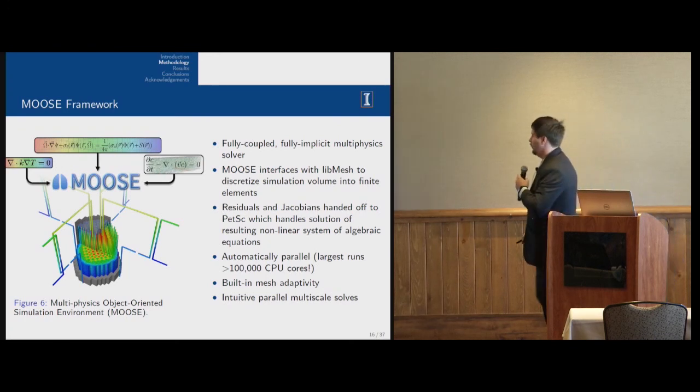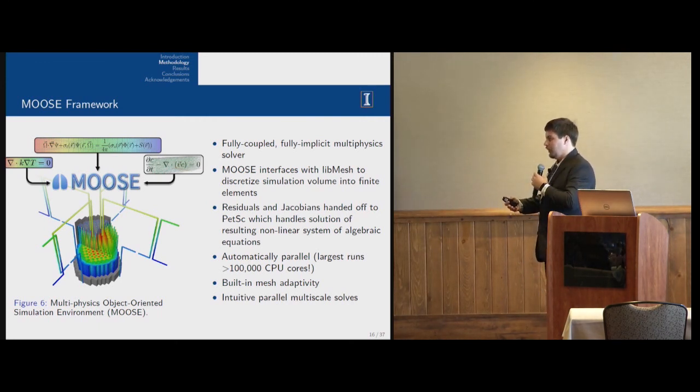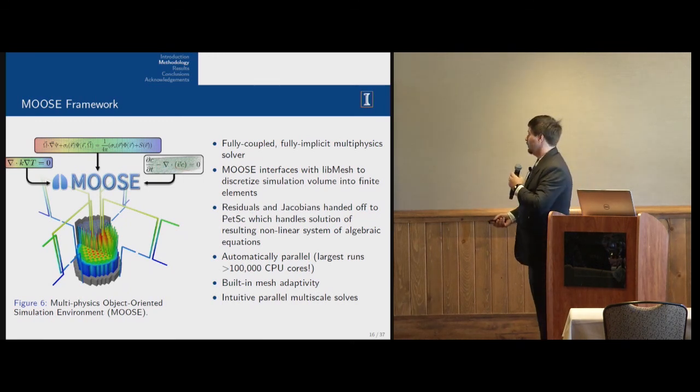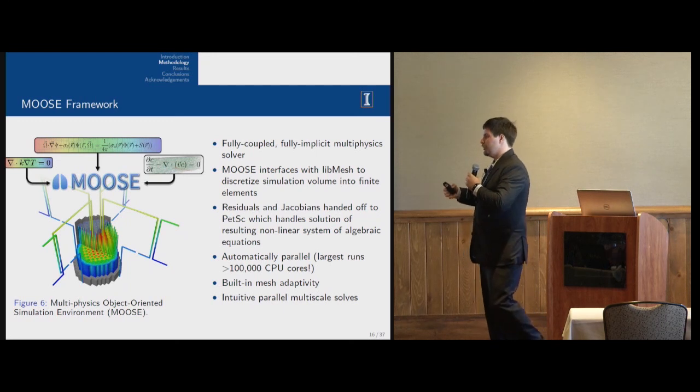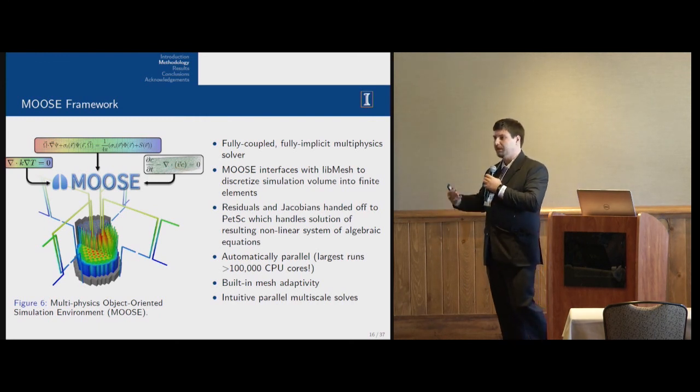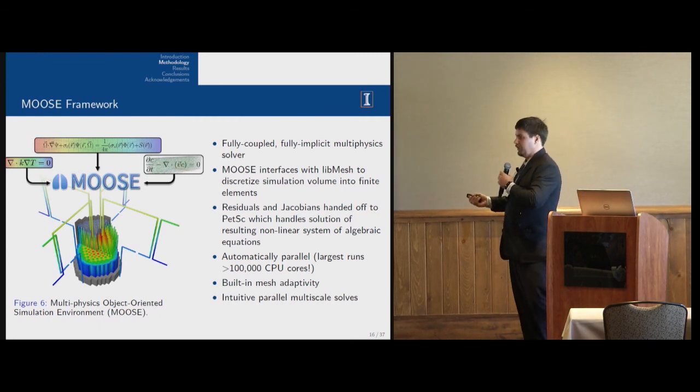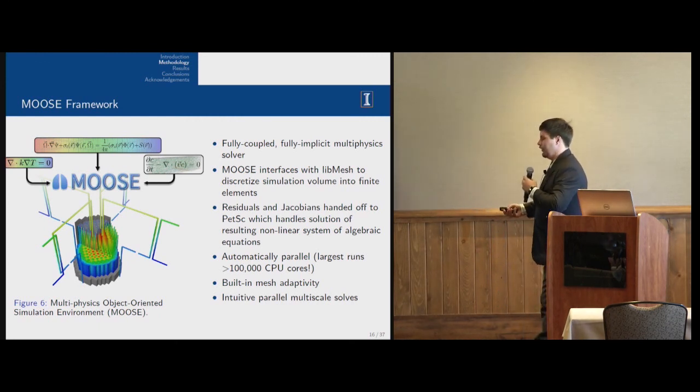The second part relates to multi-physics application. In this part of work, we use the MOOSE framework, which is a framework able to solve as many as possible equations using finite element method. It's a fully coupled, fully implicit solver. It's massively parallel. The maximum run was like 100,000 cores. It uses two known libraries: libMesh, which is used for domain decomposition, so domain decomposition is automatic, but if the user wants to specify this, he can do that. And for solving residuals and Jacobians, it uses the parallel PETSc library to solve nonlinear equations.